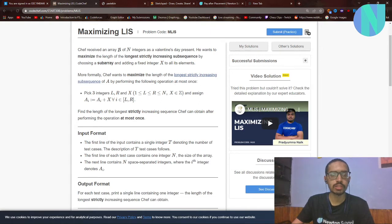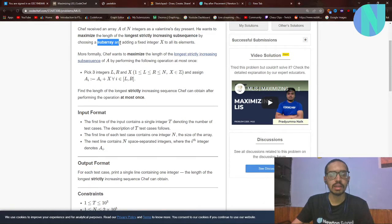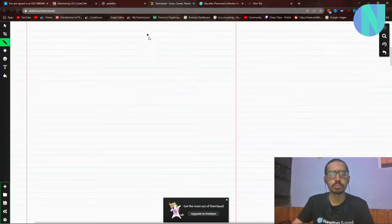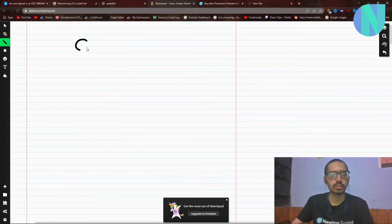Chef received an array of n integers. He wants to maximize the length of the longest strictly increasing subsequence by choosing a subarray and adding a fixed integer x to all its elements. This is the mathematical representation of that. We are given an array of size n.